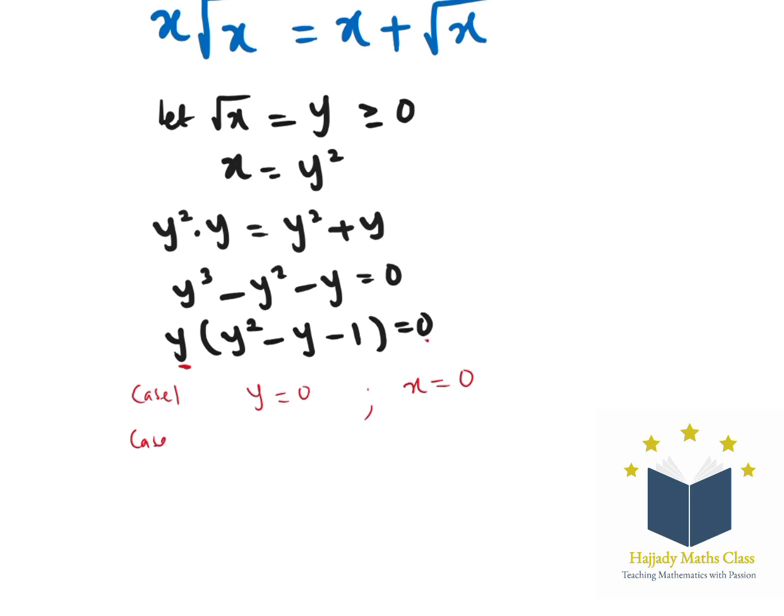For case number two, we want to talk about the quadratic equation. We have y² minus y minus 1 equals zero, so we need to solve this using the quadratic approach.